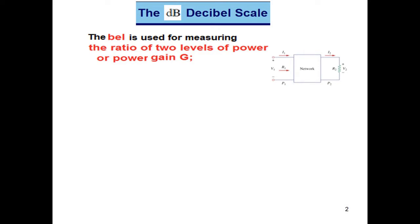Bell is used to measure ratio of two levels of power. So if you have an output power and input power, the ratio of the two powers or the power gain is represented or can be represented in logarithmic form and that is called bell.